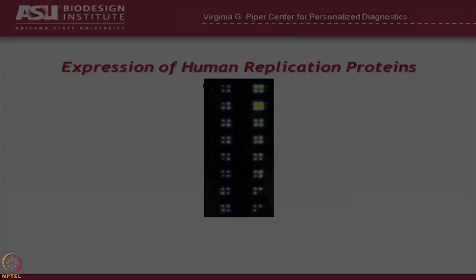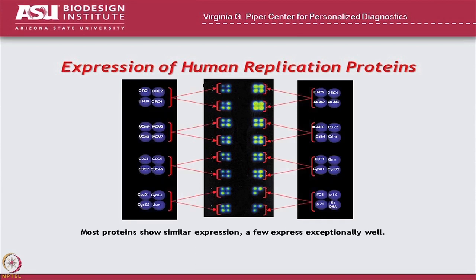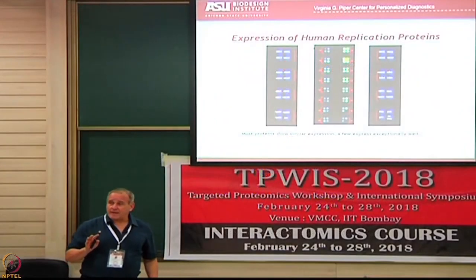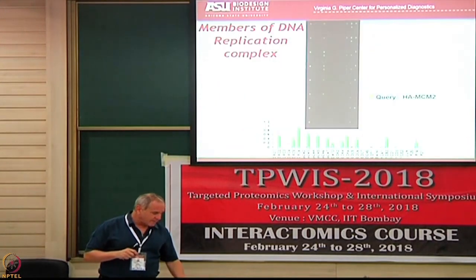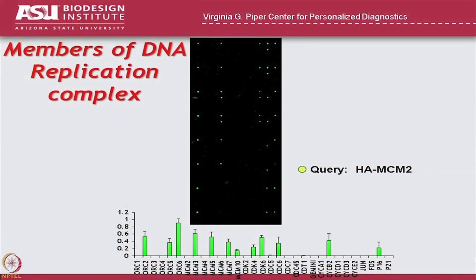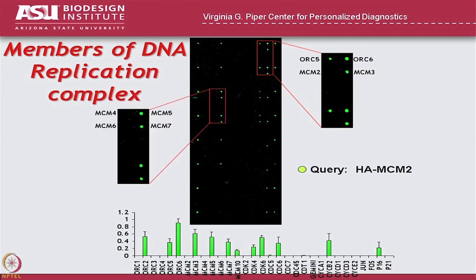Our first experiment took all the proteins in the human DNA replication complex, cloned all those genes, printed and expressed them. Measuring with anti-GST just shows that they all got made, and everybody was done in duplicate. Then we would query the array using one of the proteins in the set — MCM2 — and you can see that MCM2 binds to ORC5, ORC6, and MCM3, and here it is binding to these guys. Since it's done in duplicate, we're confident of the result.